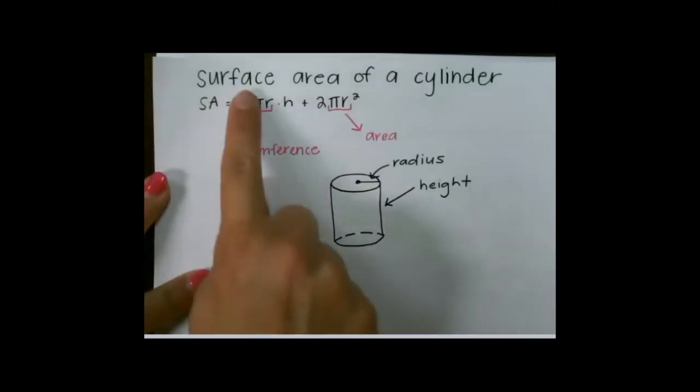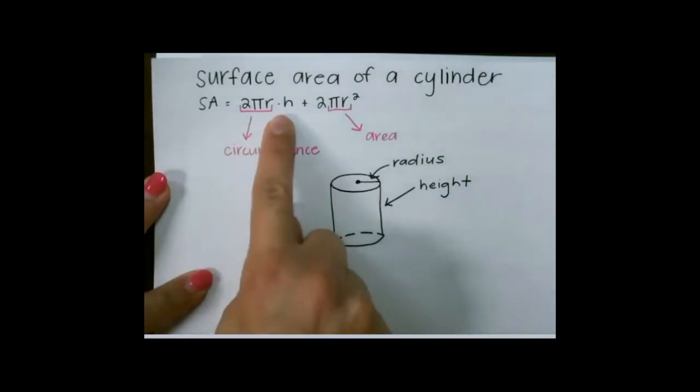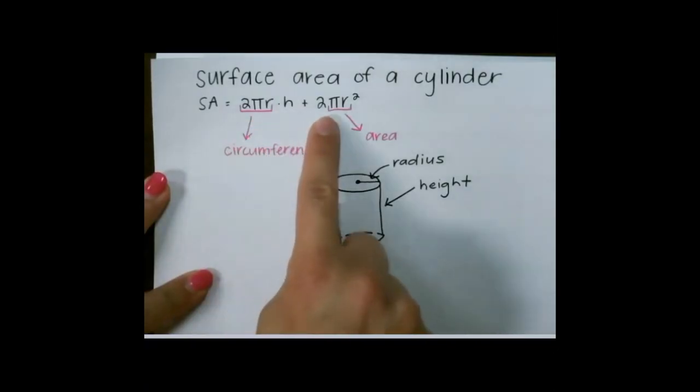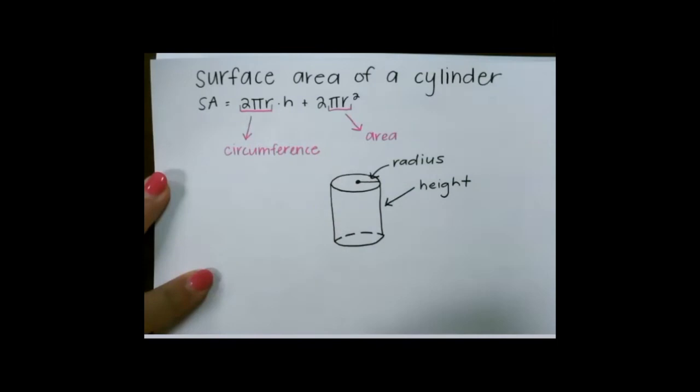So to review our formula for surface area of a cylinder, again, it is 2 pi r times height plus 2 pi r squared. Remember, surface area is finding the area of every shape on the outside, and this one is made up of a rectangle when laid flat, and 2 circles.